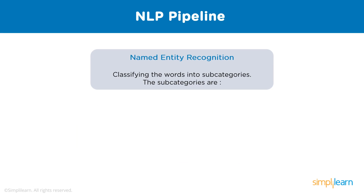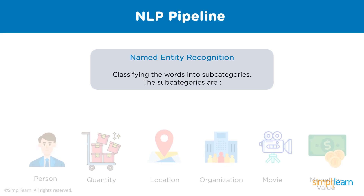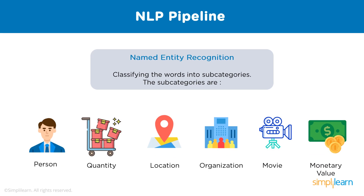The final step we're looking at is Named Entity Recognition, also known as named entity identification, entity chunking, and entity extraction. It is a subtask of information extraction that seeks to locate and classify named entities mentioned in unstructured text into predefined categories. Extracting the main entities helps sort unstructured data and detect important information, especially for large datasets. Subcategories include: person, quantity, location, organization, movie name, and monetary value like dollars or euros.